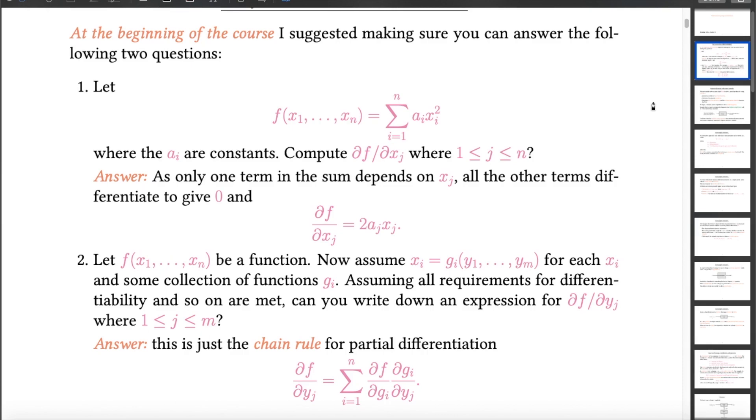The first one just gives you a function of n variables, namely a weighted sum of their squares, and asks you to compute a partial derivative. Well, I'm hoping that this is straightforward for you, because if I write this summation out in full, then I've got a1 x1 squared plus dot dot dot plus, okay, we're differentiating with respect to xj, which will appear as aj xj squared plus dot dot dot all the way to the end of this thing, which is going to be an xn squared. And hopefully you will have noticed that the only term in that sum that depends on j is this one. So all the others differentiate to 0, and this guy differentiates to 2aj xj. And we're done.